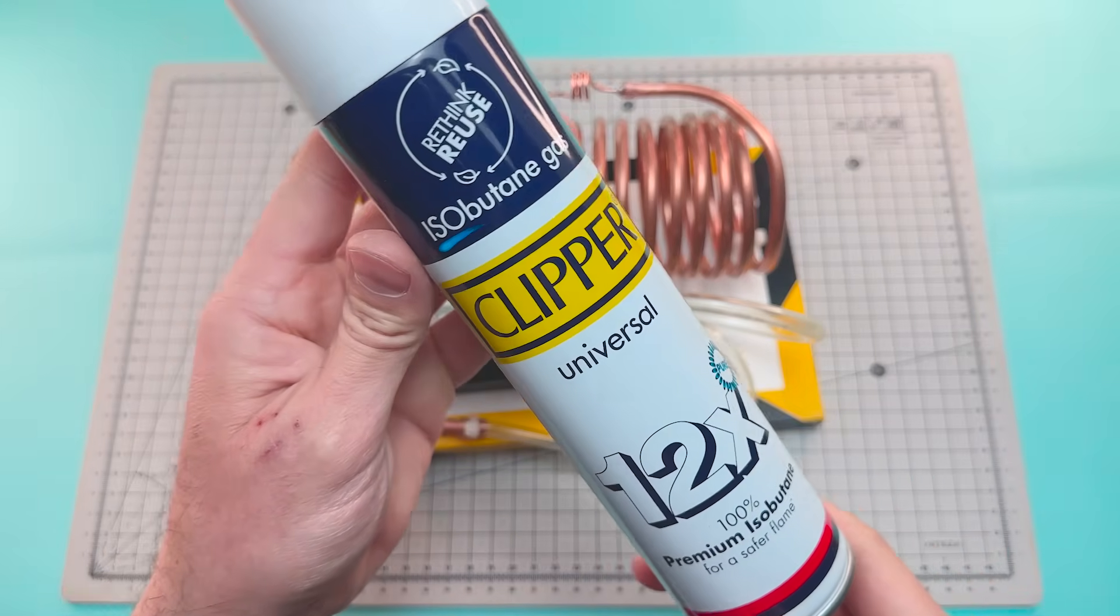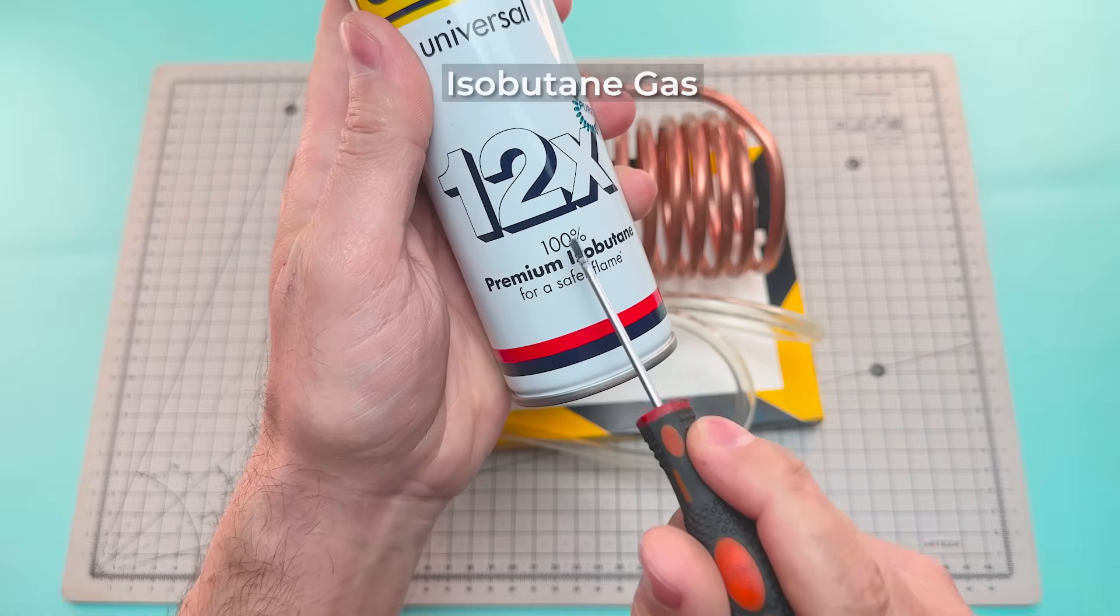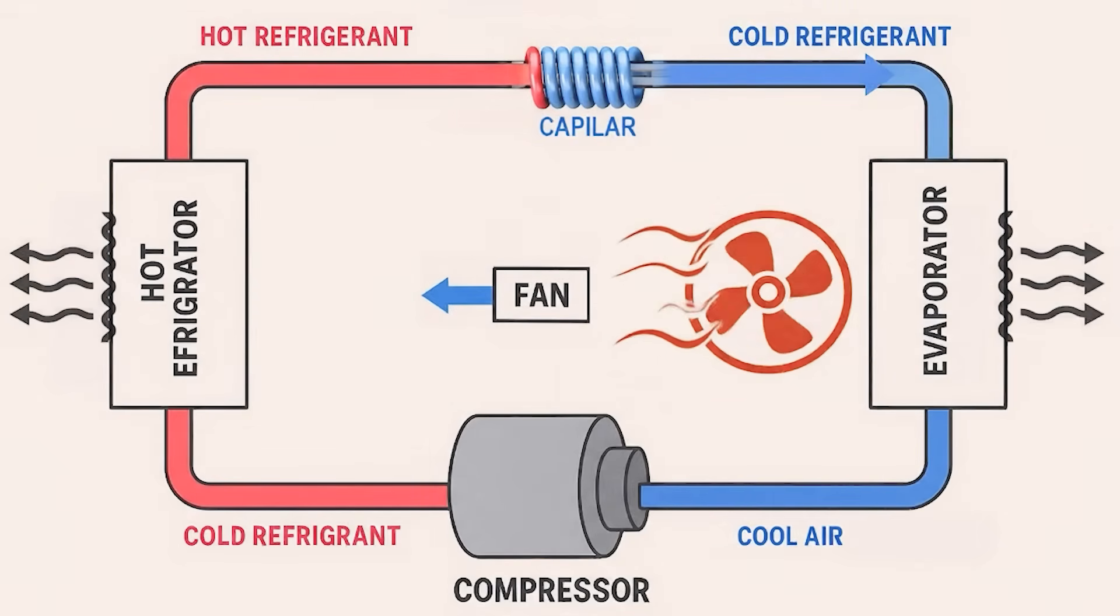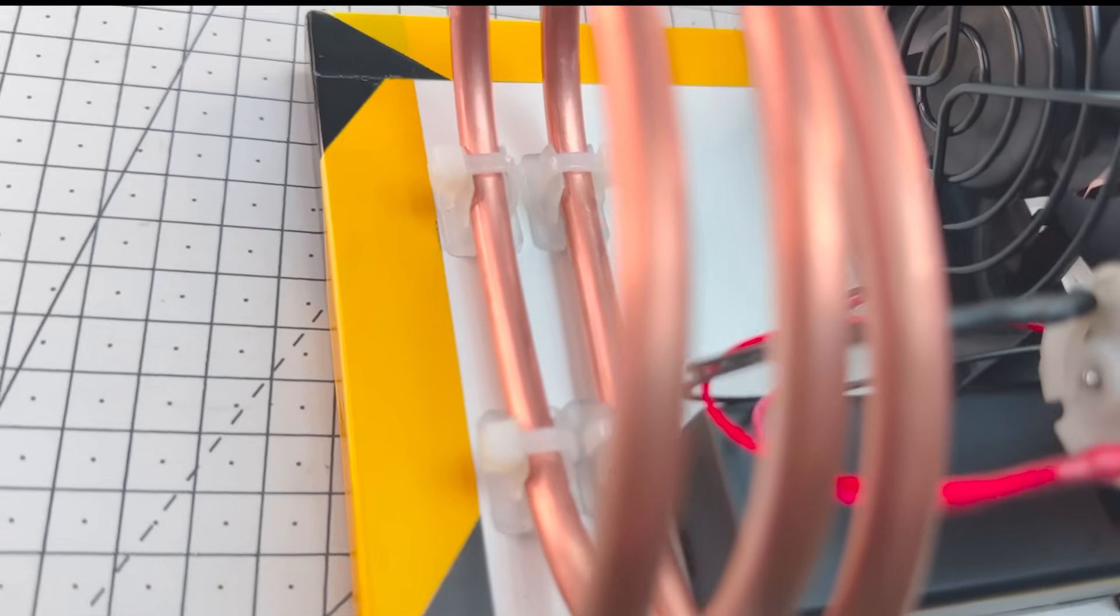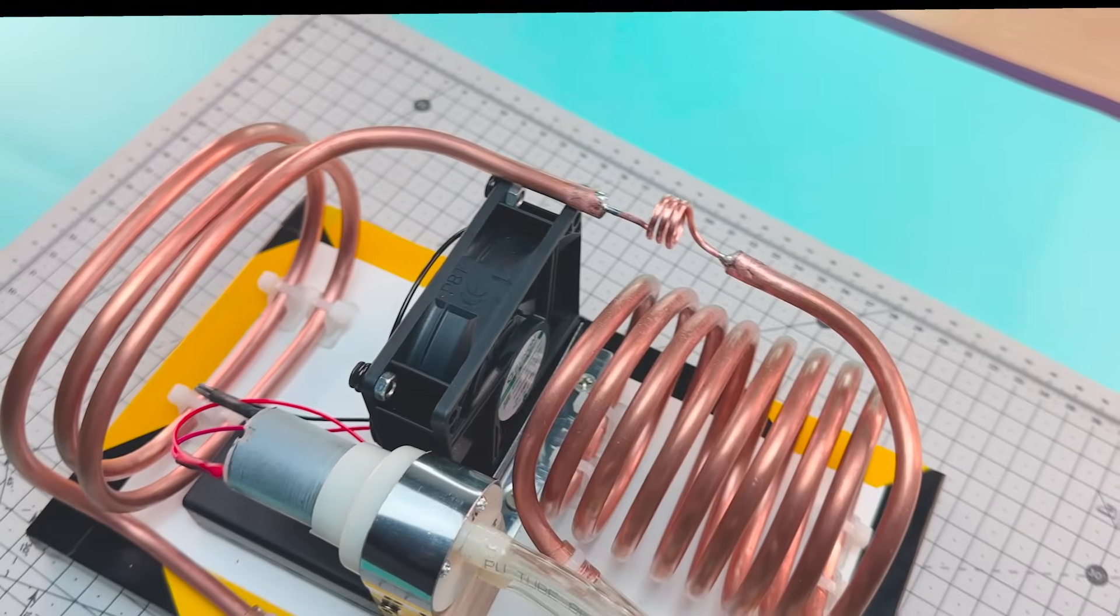Now we're going to charge our circuit with isobutane. The heart of the system is the refrigeration cycle, and although it might seem complex, it's actually based on a simple physical principle, using a gas that, when evaporating, absorbs heat from the environment. That gas is isobutane, and it's going to be our ally in turning hot air into cold air.